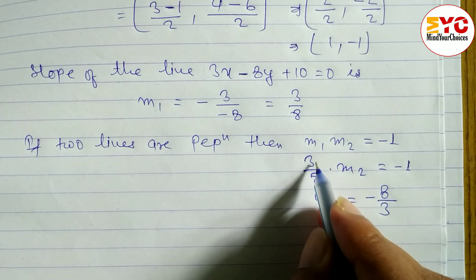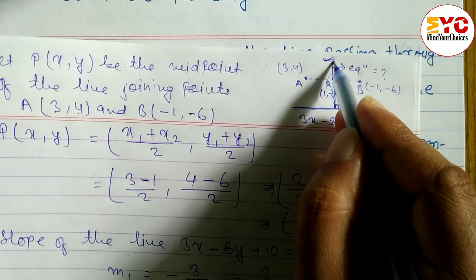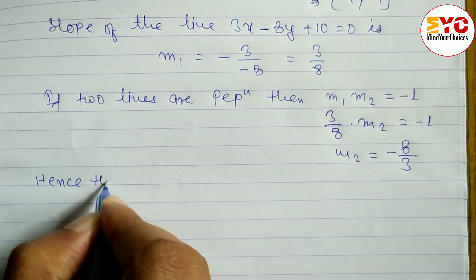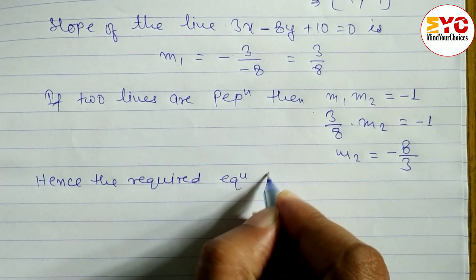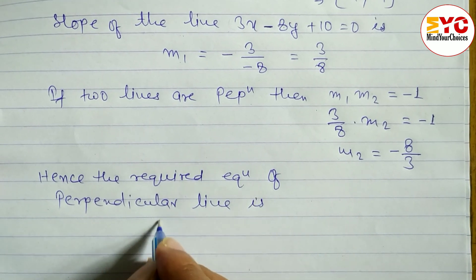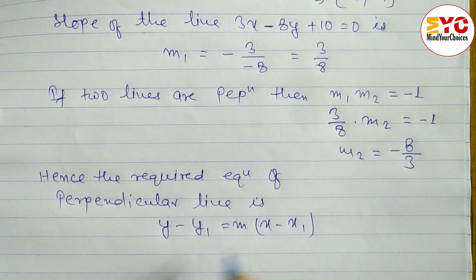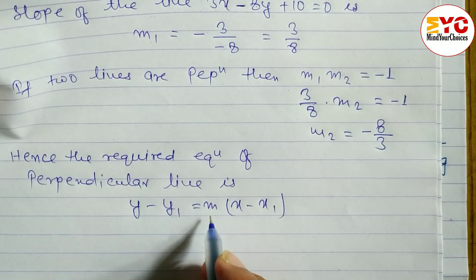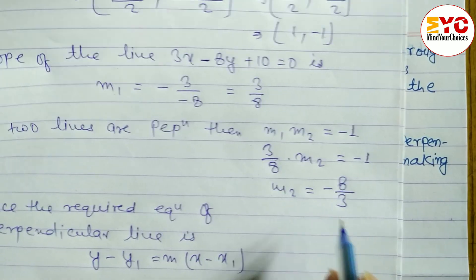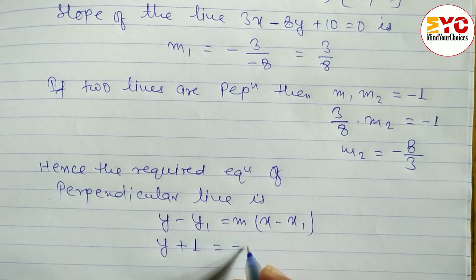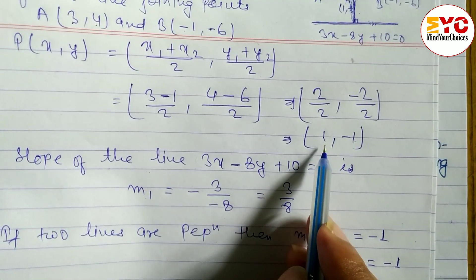So M2 = -8/3 is the slope of the required line. Now we have the slope and one point (1, -1), so we use the one-point formula: y - y1 = M(x - x1). Here x1 = 1, y1 = -1, and M = -8/3. So: y - (-1) = (-8/3)(x - 1), which gives y + 1 = (-8/3)(x - 1).